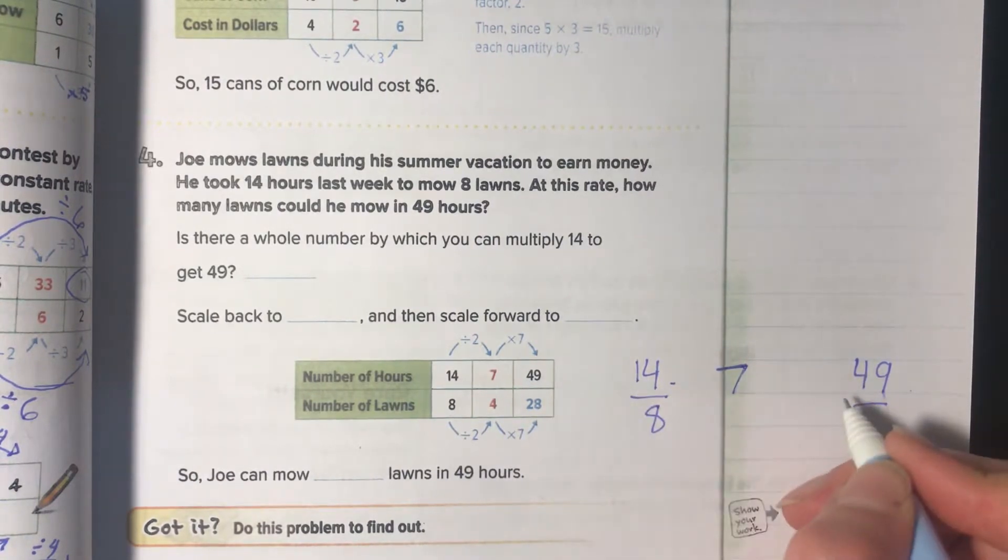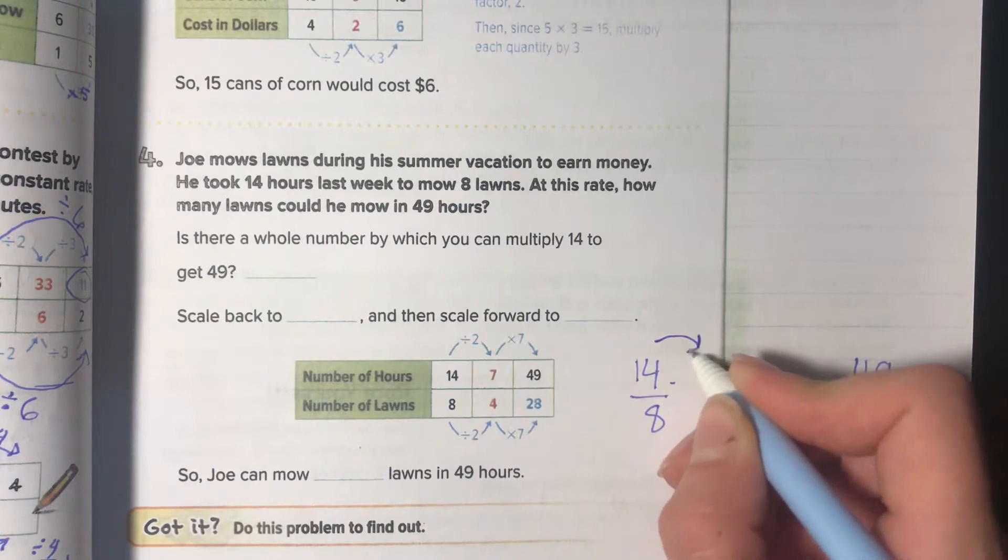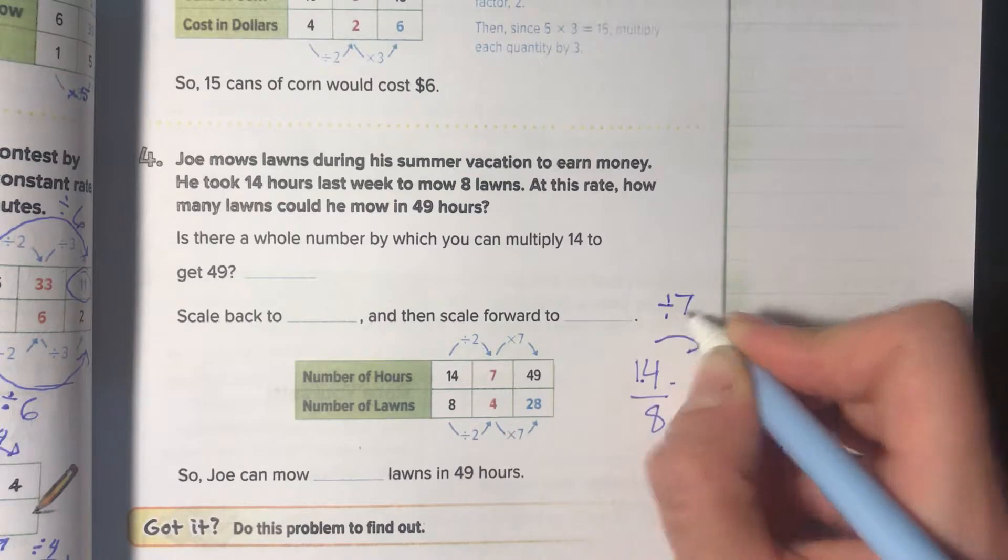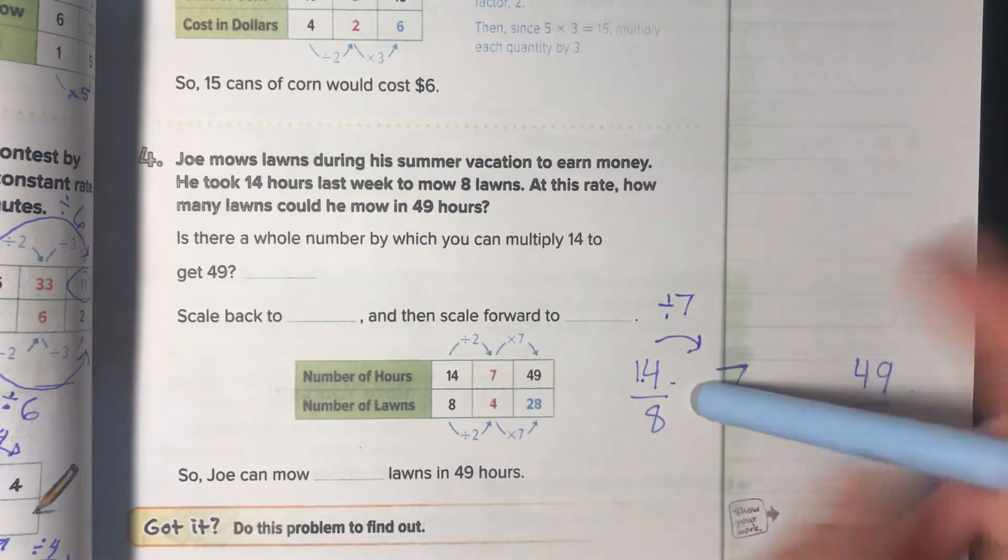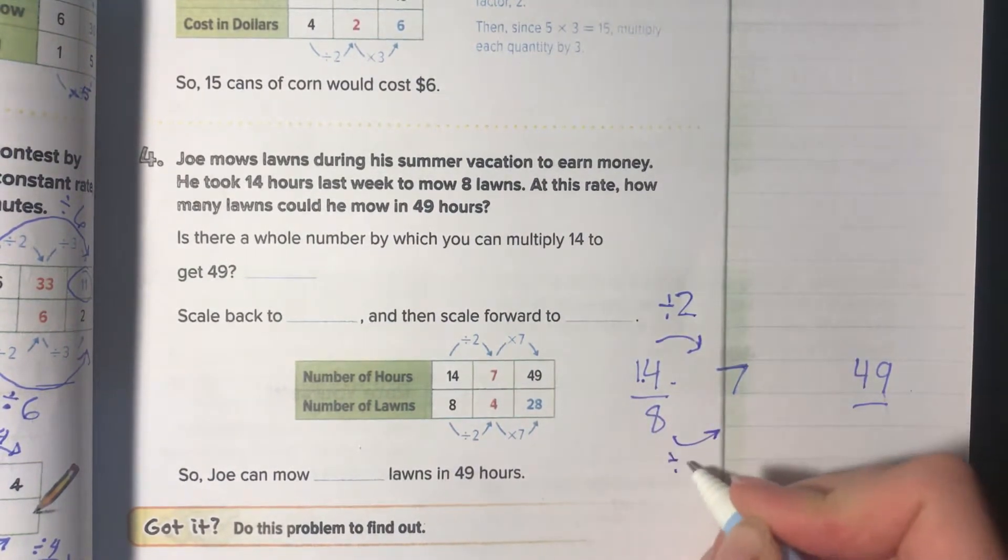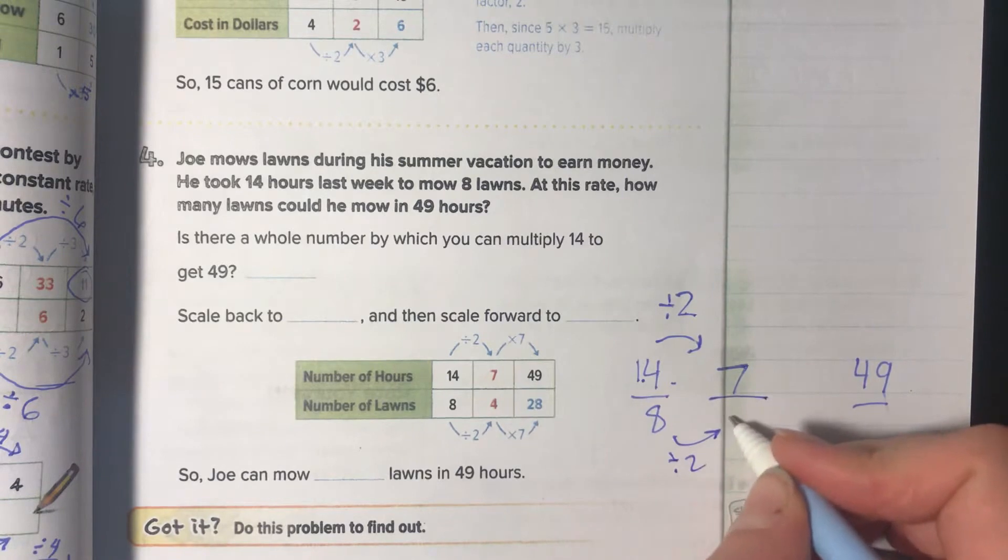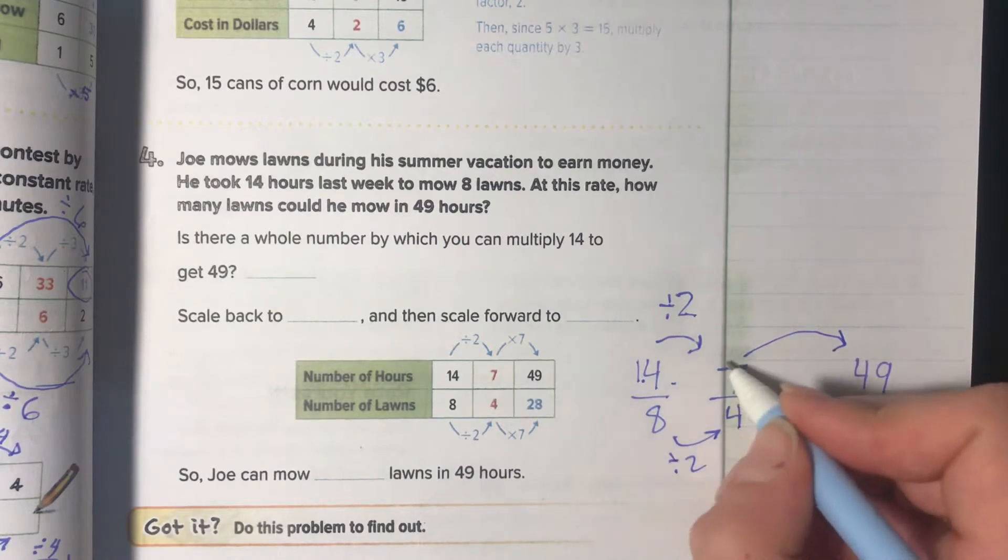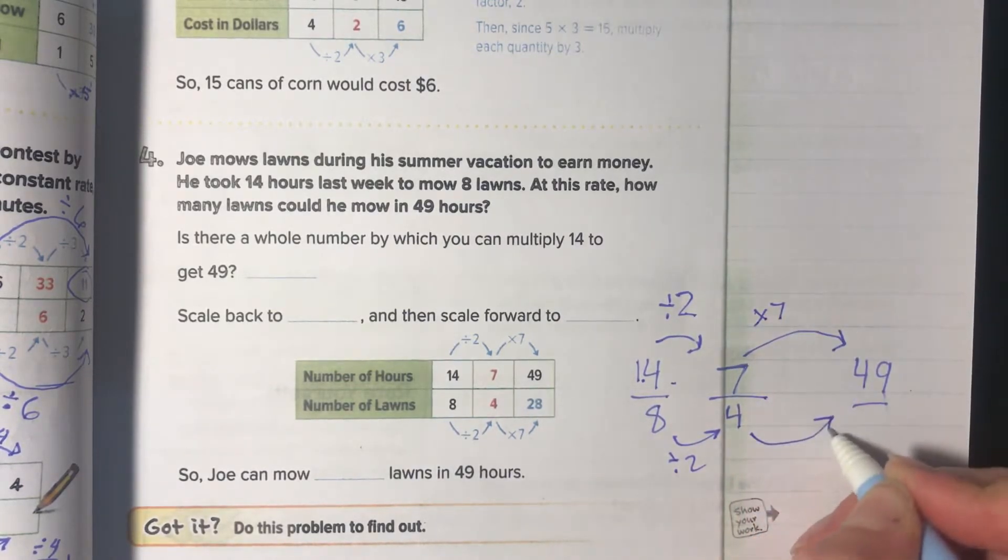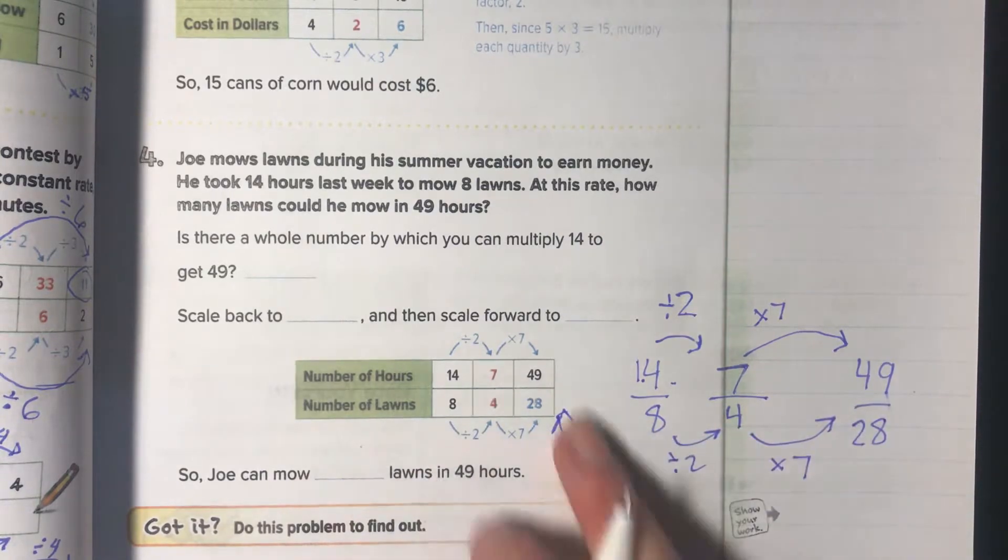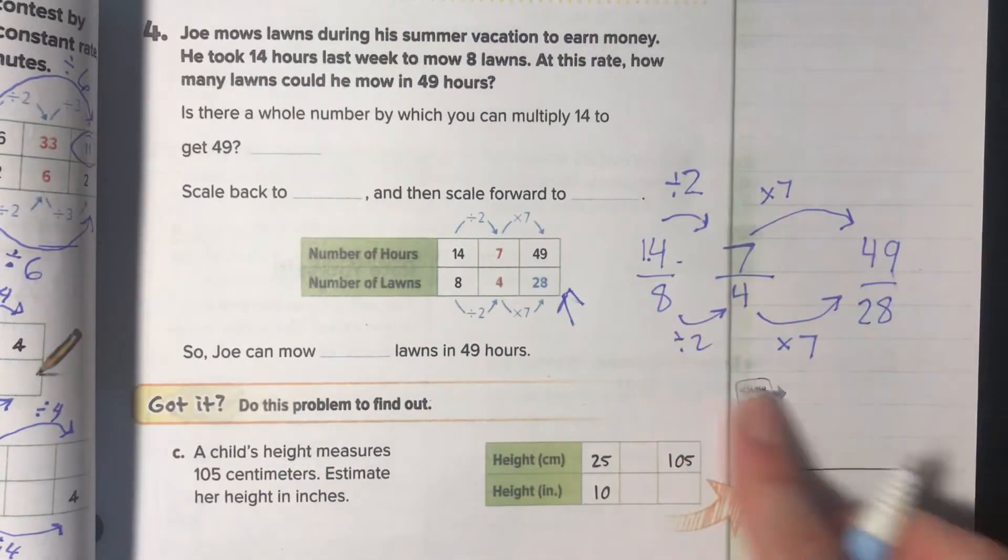To go from fourteen to seven, divide by two. So we have to divide by two, which is four. Now we can use this to scale back up. How do we get to forty-nine? Times seven. Do the same top and bottom, times seven, which is twenty-eight. So now we've found our answer. We had to use scaling. So I should see this work in your book.